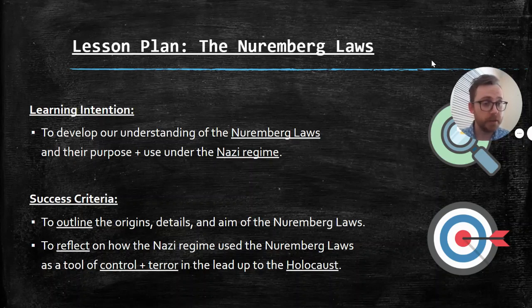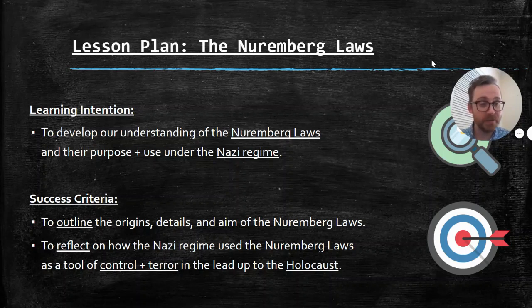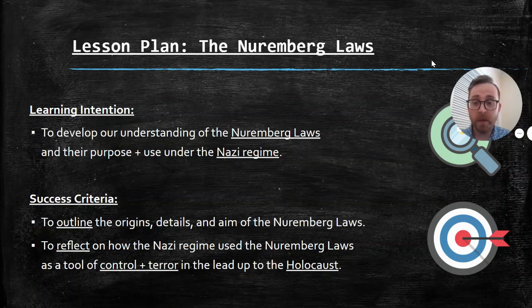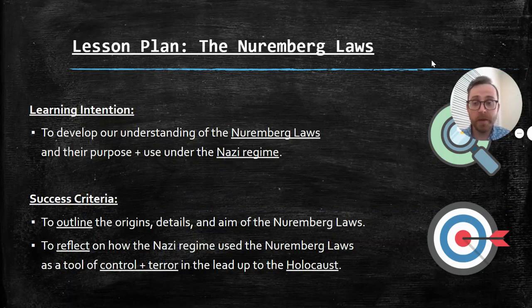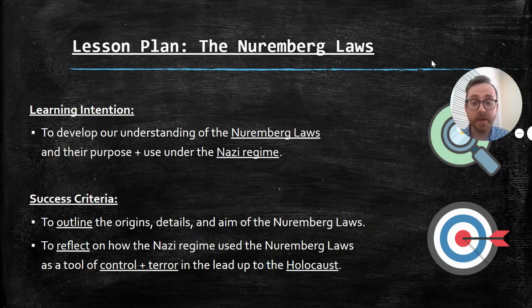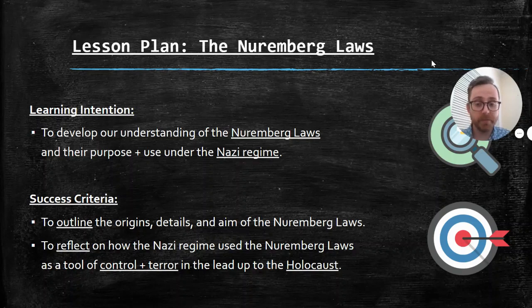I'm just going to go through the class slides, explain the lesson activity, and hopefully you'll have the rest of the lesson to complete the activities so you don't have any classwork turning into homework. Our learning intention today is to develop our understanding of the Nuremberg Laws and their purpose and use under the Nazi regime. Success criteria today is to outline the origins, details, and aim of the Nuremberg Laws.